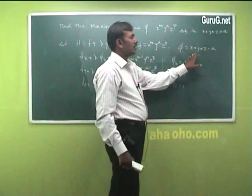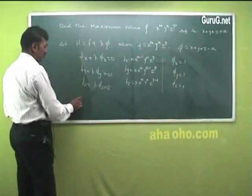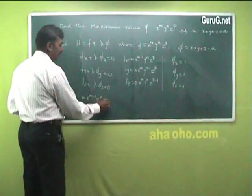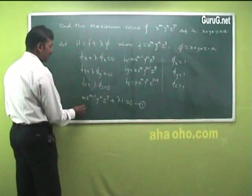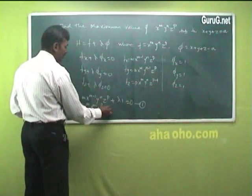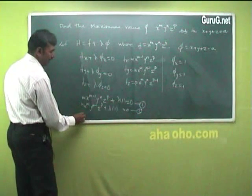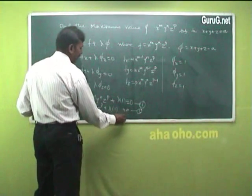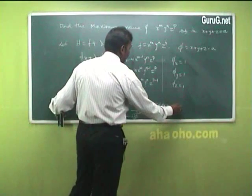Substituting these values, equation 1 becomes: m·x^(m−1)·y^n·z^p + λ = 0. Equation 2: n·x^m·y^(n−1)·z^p + λ = 0. Equation 3: p·x^m·y^n·z^(p−1) + λ = 0. And equation 4: x + y + z − a = 0.